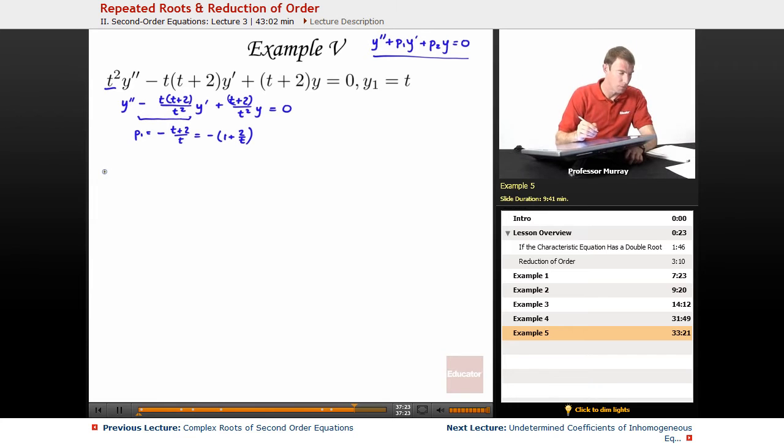So I'm going to work with that, and I'm going to use the formula that we had for reduction of order. Let me remind you what that was. We went over this in the lesson overview, but that was quite a few minutes ago. So I'll remind you what that formula was. It's y₁ times w' plus the quantity (2y₁' + p₁y₁) times w = 0. The idea here is that we don't know what w is, but we know everything else.